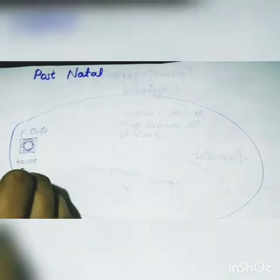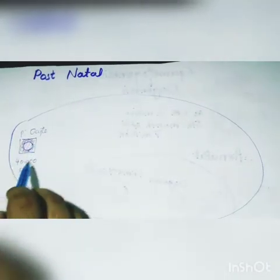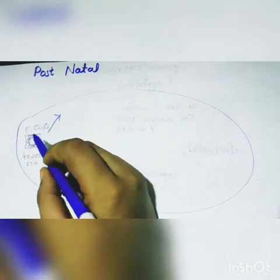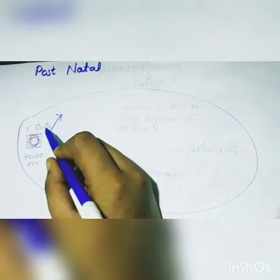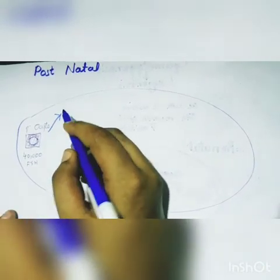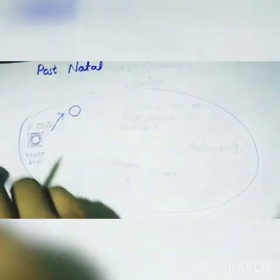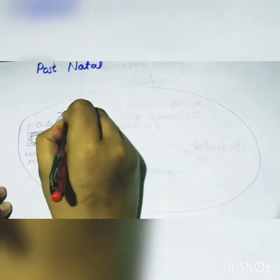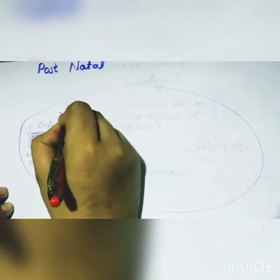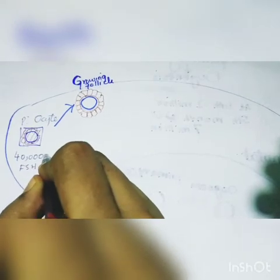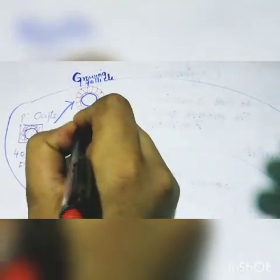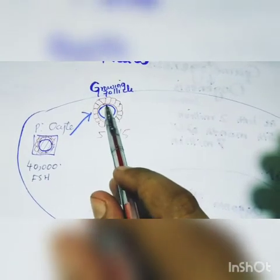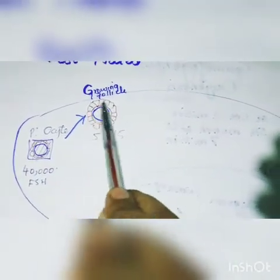FSH is released and starts stimulating these follicular cells. This primary oocyte — also called the primordial follicle — is converted into a growing follicle. The difference in the growing follicle is that the flat epithelial cells surrounding it now become cuboidal cells. Out of the 40,000 primordial follicles, only 5 to 15 will become growing follicles, which are surrounded by cuboidal cells.